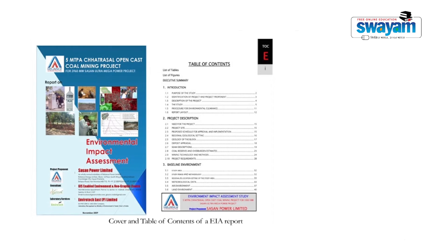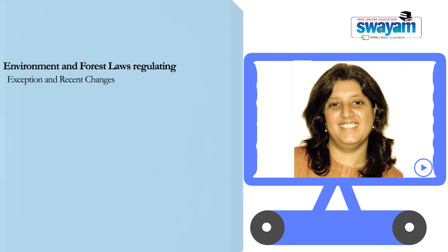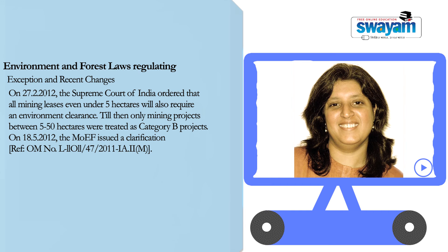In recent times, while this procedure is clearly laid out in the EIA Notification, there are also recent exceptions and changes that have come about through circulars, office memorandums, or clarifications issued by the Ministry of Environment. Three of these are listed here. For instance, on the 27th of February 2012, the Supreme Court ordered that all mining leases even under 5 hectares will also require environmental clearance. Until this order, Category B projects were basically between 5 hectares and 50 hectares. Now all mines under 50 hectares require an environmental clearance as a Category B project, and the Ministry of Environment and Forests issued a clarification on this in May 2012.